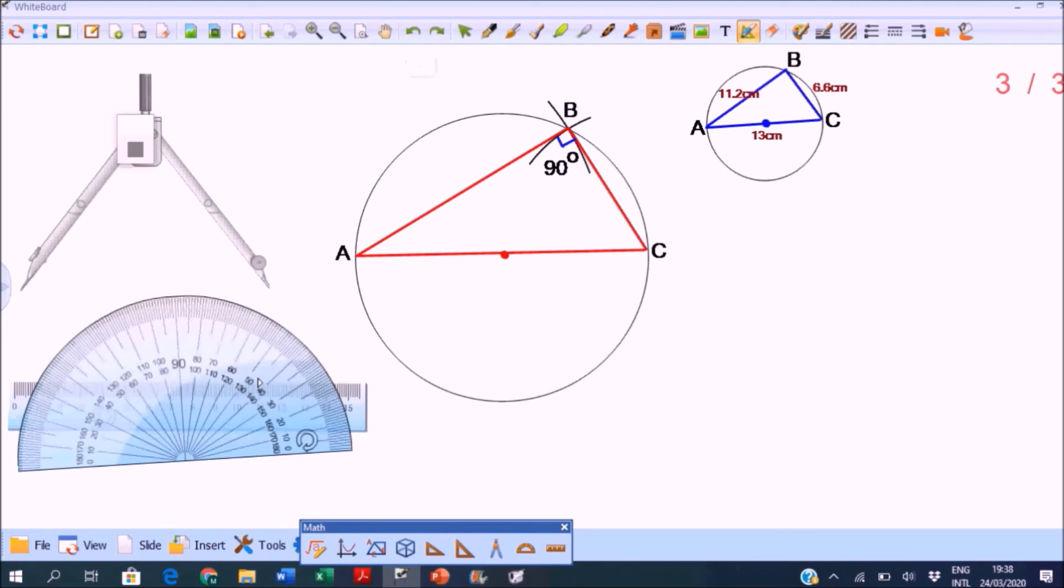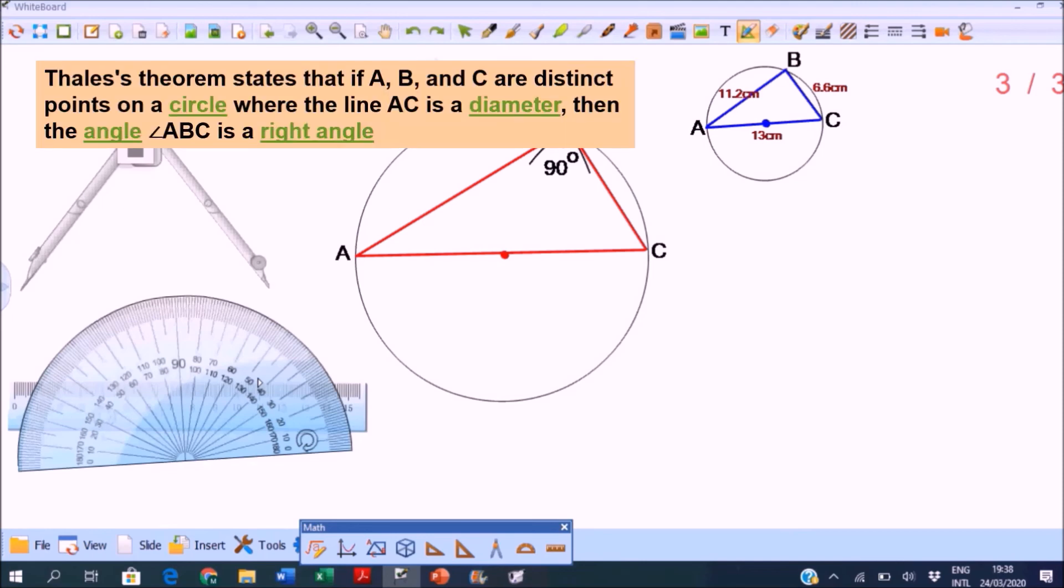Actually it is. It is known as Thales' theorem, which states that if A, B, and C are distinct points on a circle where the line AC is a diameter, then the angle ABC is a right angle. You can check this - try another example and you will see.